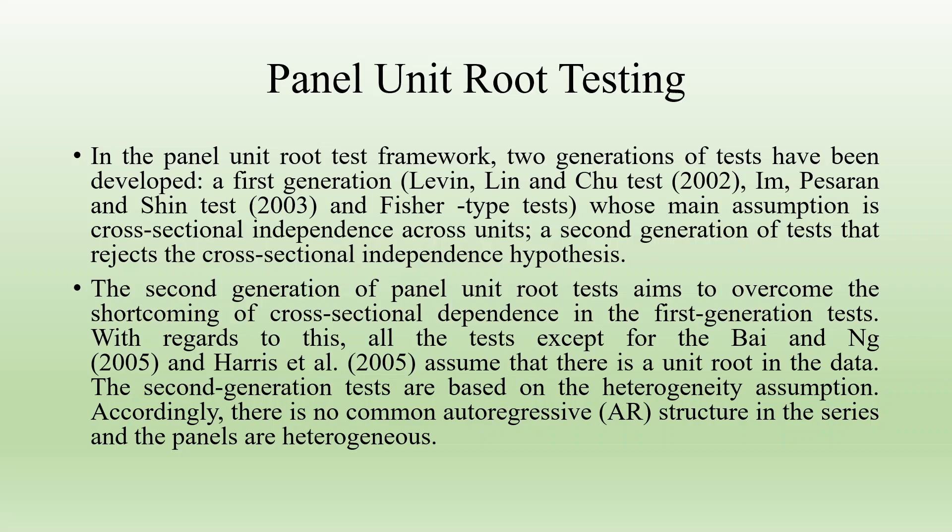In the panel unit root test framework, two generations of tests have been evolved. The first generation includes the Levin, Lin and Chu test (2002), the Im, Pesaran and Shin test (2003), and the Fischer type test. Their main assumption is cross-sectional independence across the units. The second generation of tests rejects the cross-sectional independence hypothesis and aims to overcome the shortcoming of cross-sectional dependence in first generation tests. The second generation tests are based on heterogeneity assumptions, meaning there is no common autoregressive structure in the series and the panels are heterogeneous.